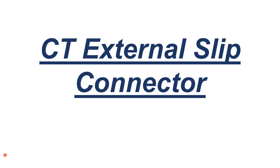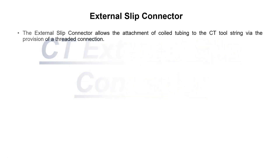Here we will discuss the CT external slip connector. The external slip connector allows the attachment of coil tubing to the CT tool string via the provision of a threaded connection.